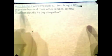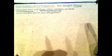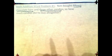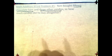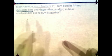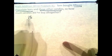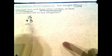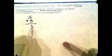15 chocolate bars and three other candies. If chocolate bars are considered candies, obviously it is, you'll be adding these two numbers together. So you have 15 plus 3, and 5 plus 3 is 8.